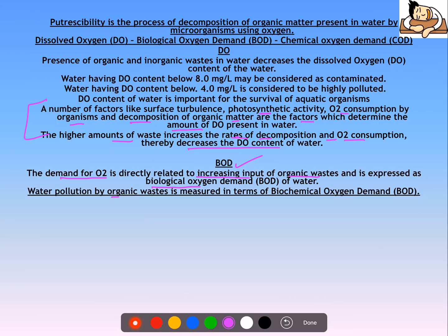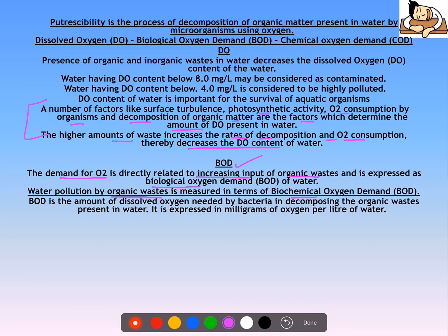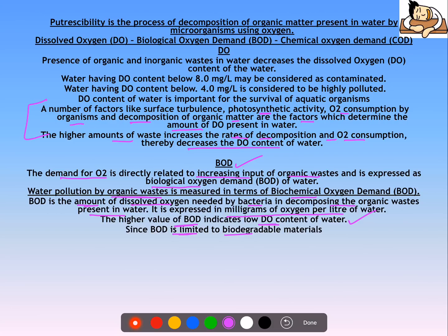Water pollution by organic waste is measured in terms of BOD. BOD is the amount of dissolved oxygen needed by bacteria to decompose the organic waste present in water. Its unit is milligrams of oxygen per liter of water. Higher BOD indicates low DO content of water. Since BOD is limited to biodegradable materials, it is not a reliable method of measuring pollution load in water.